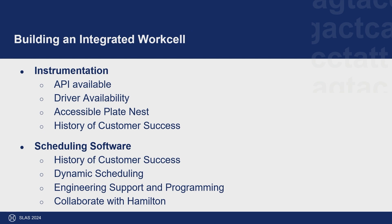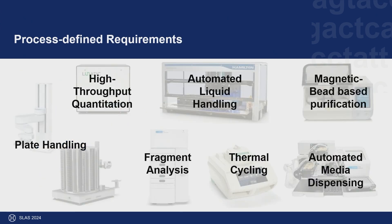We needed dynamic scheduling, which Green Button Go offers. Biosero offered engineering support and programming of the software itself, which they did extensively through factory acceptance testing of the physical work cell at Hamilton as well as programming and site acceptance testing on-site in Alameda. Hamilton did the physical build of the work cell itself, so we needed scheduling software from a partner willing and able to work closely with Hamilton to complete the build — which Biosero was. The engineers at Biosero know Hamilton instruments well, so it was a no-brainer.